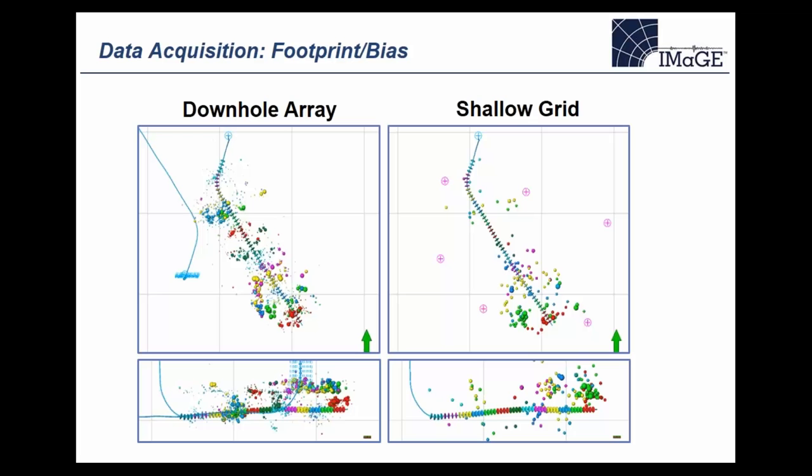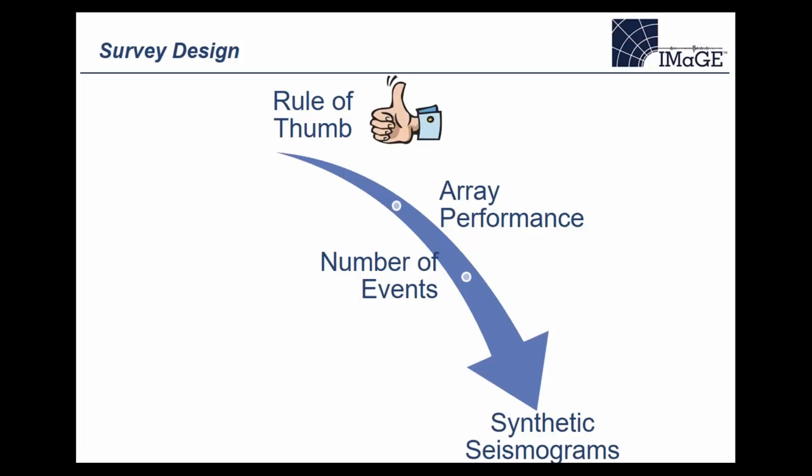In terms of sensitivity: if this had been a full surface array with lines of sensors or patches — a larger sensor count — we would have been able to stack more and increase sensitivity for a more consistent response. This is essentially an apples-to-apples comparison between a downhole image and a shallow grid buried-array image.